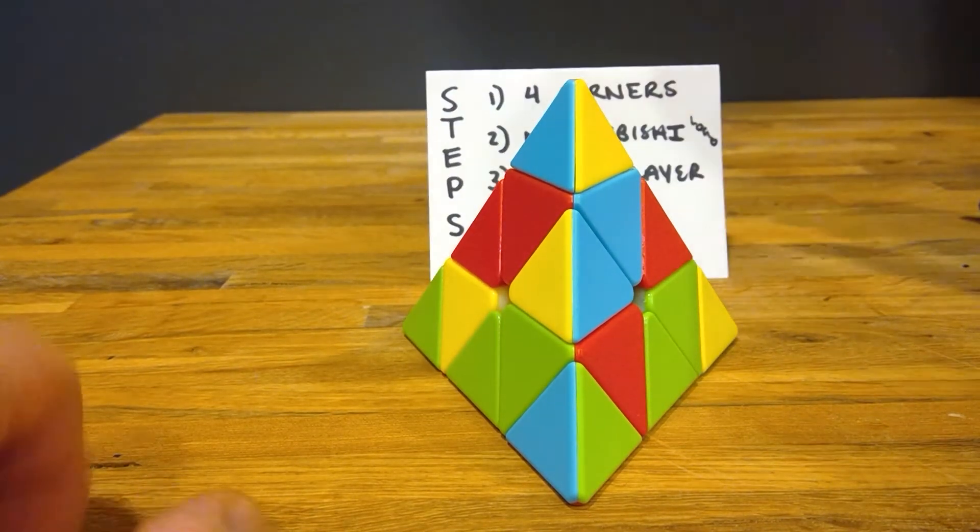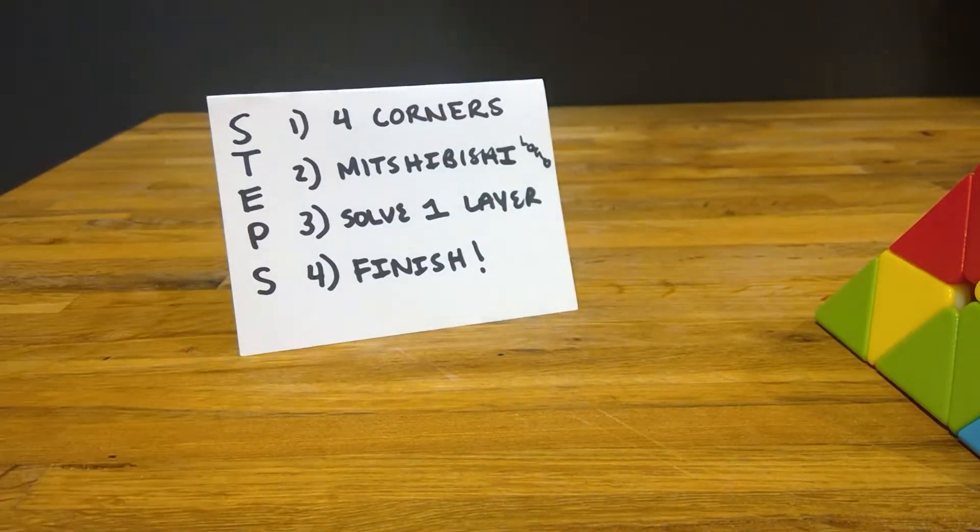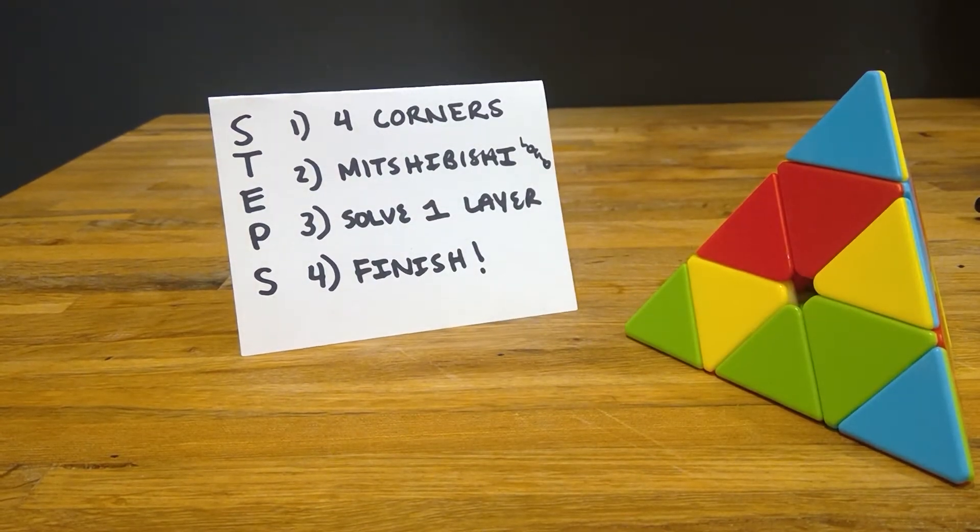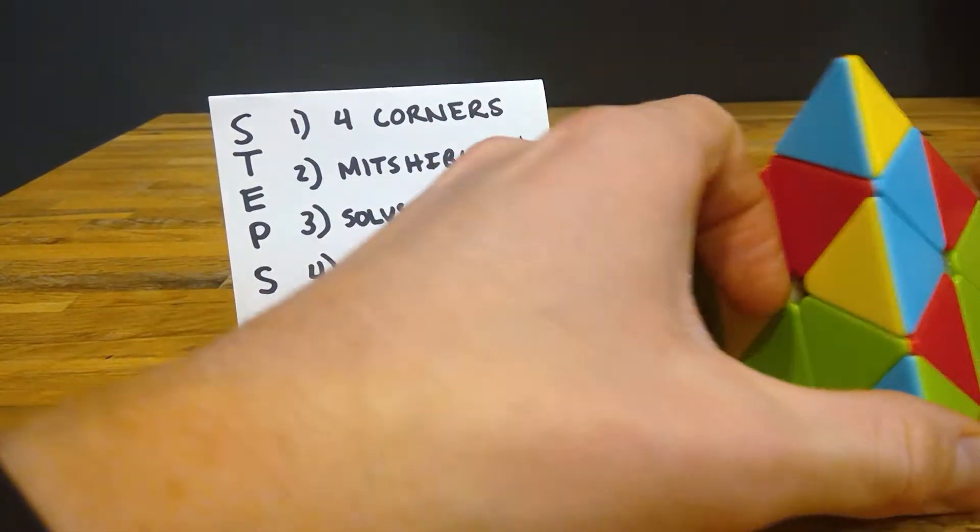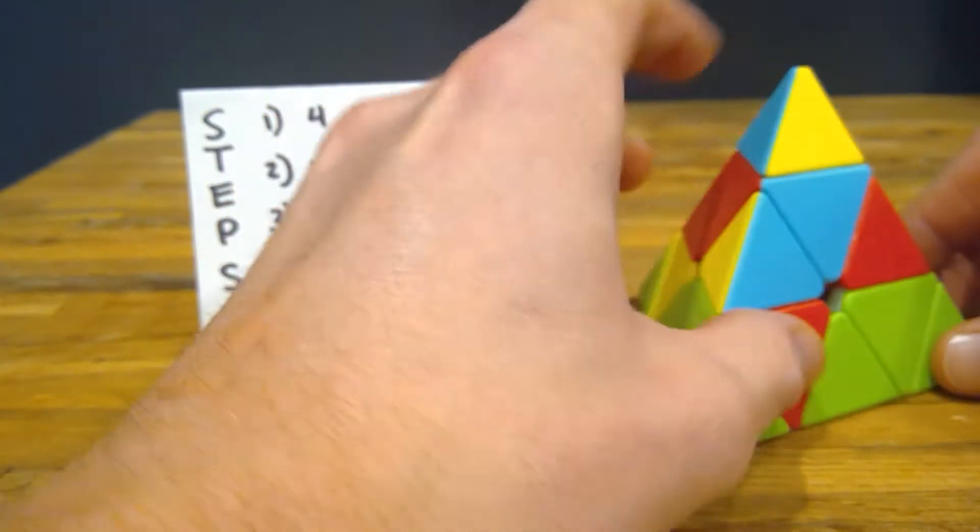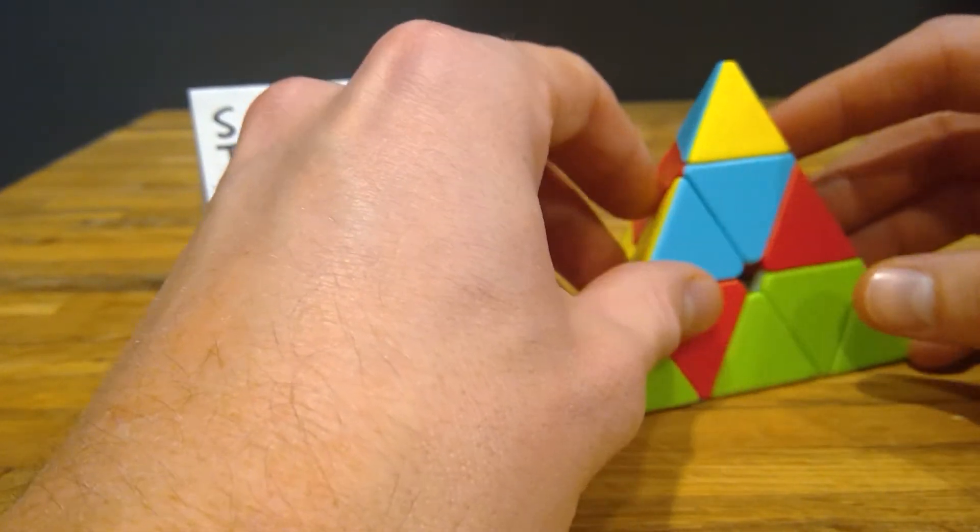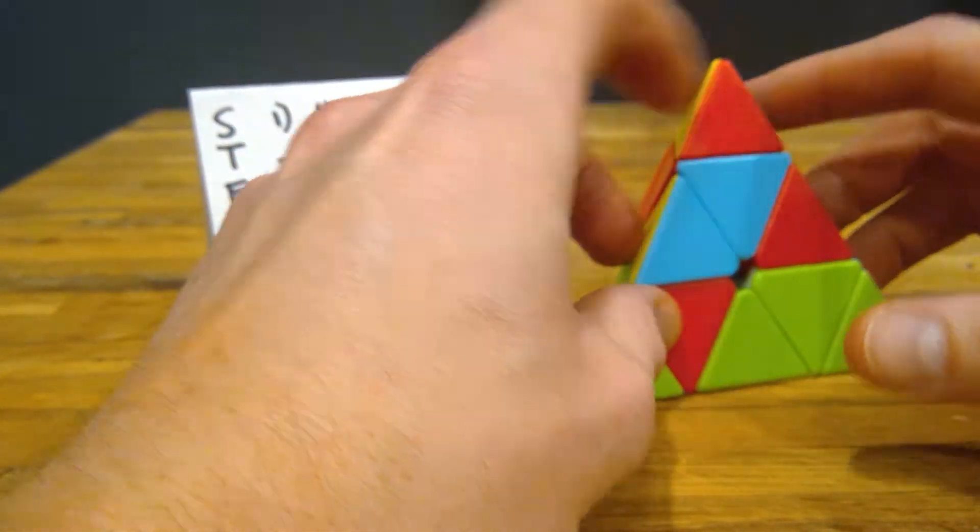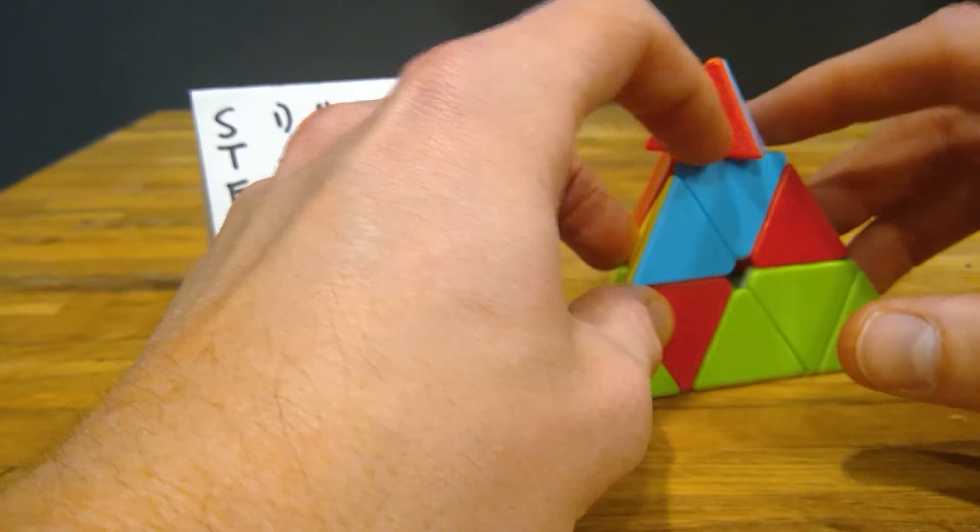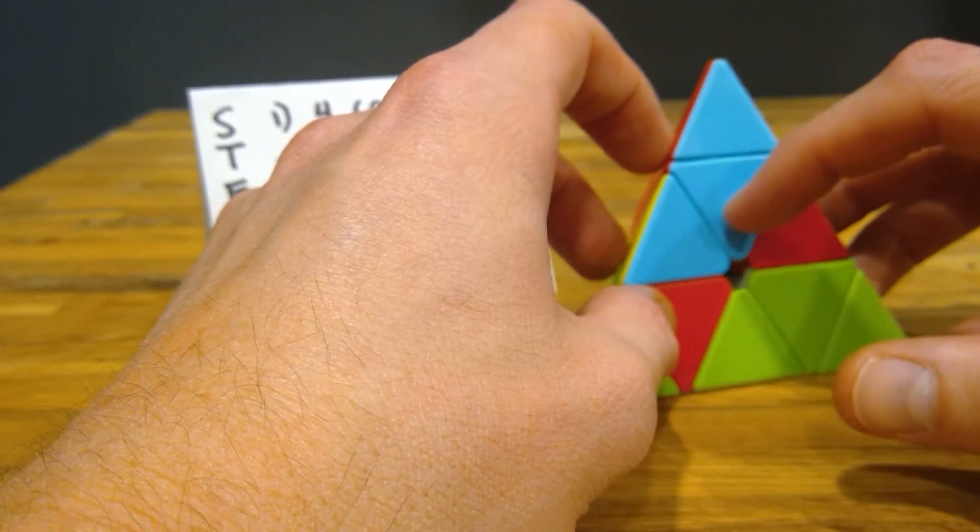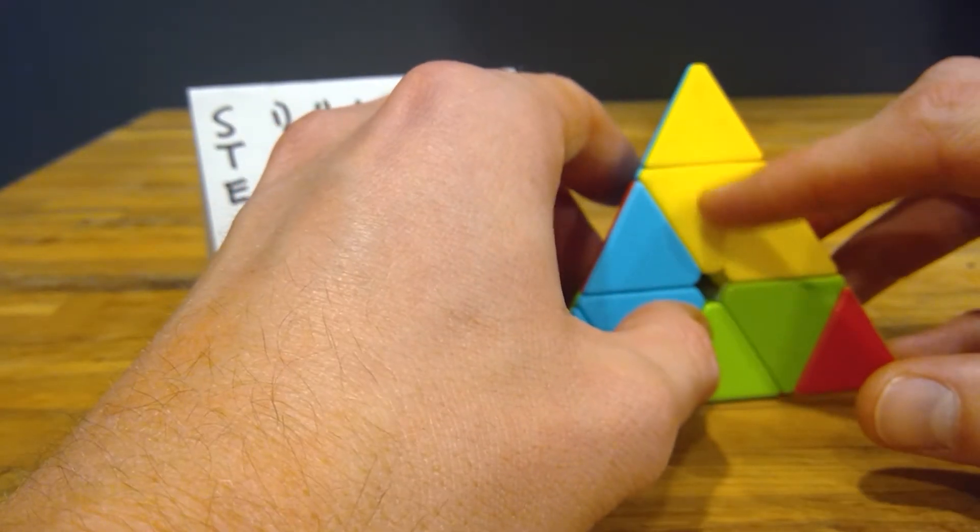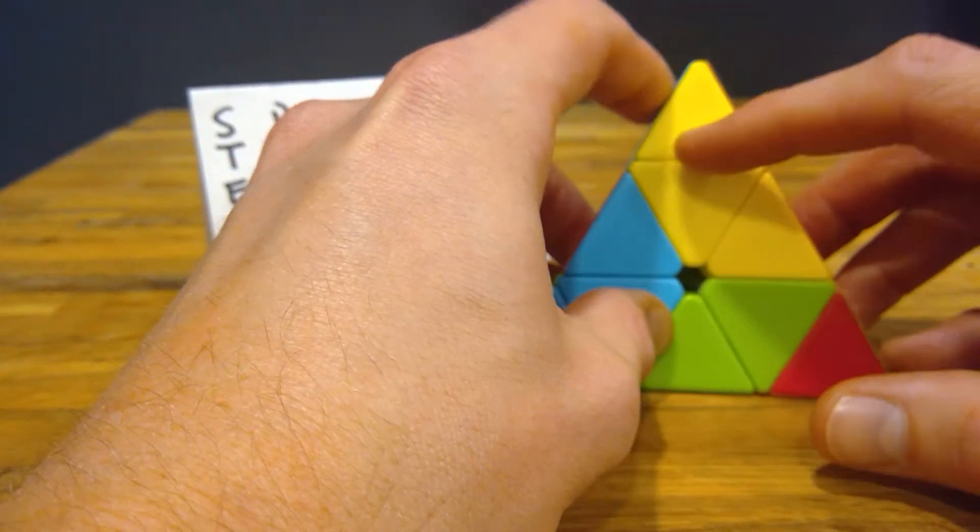Here are the four steps to solve the Pyramix. Let's start with step one, corners. There's four corners. I should have written points, but I'm not going to make a new card, so bear with me. Points. Already I'm not in frame. So check this out. Here's a point, the super mini pyramid. It just turns.